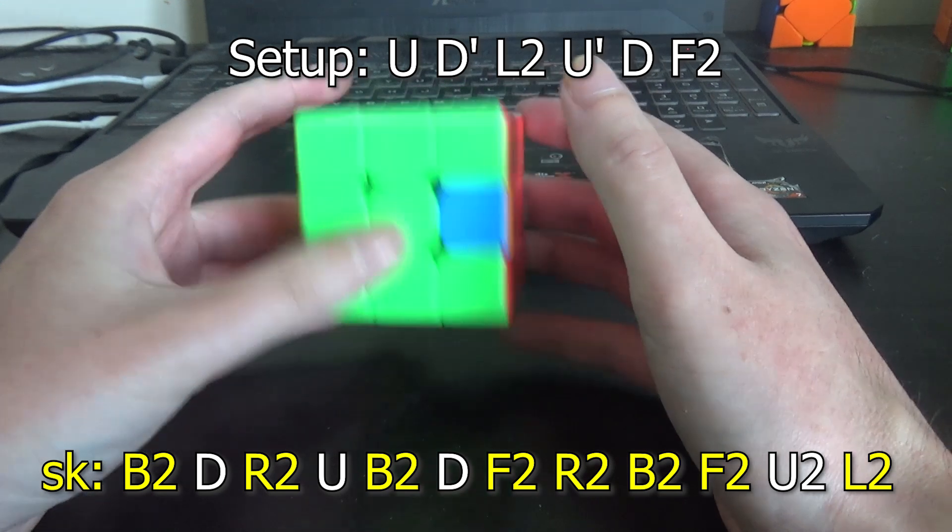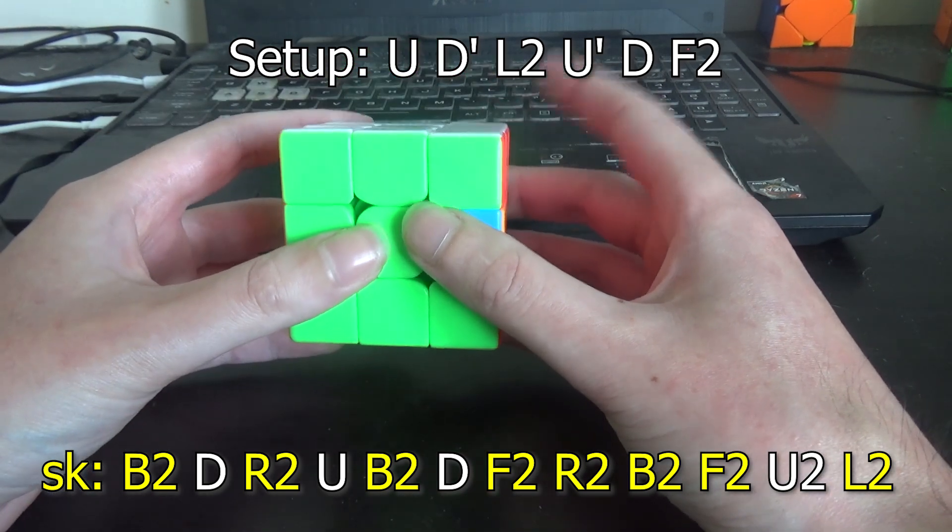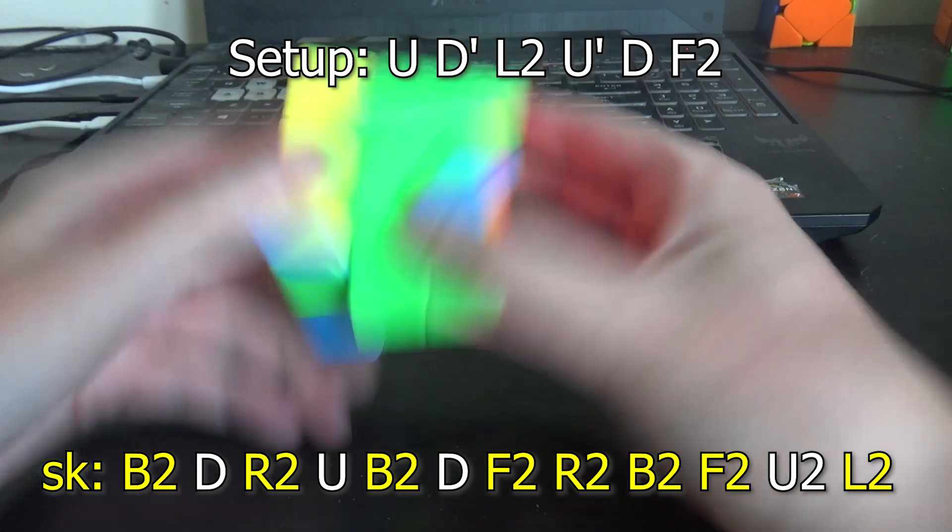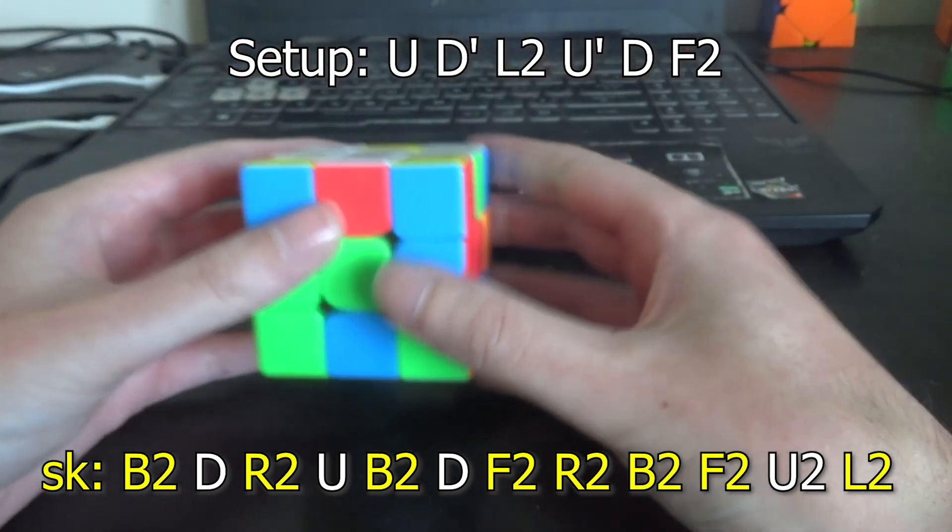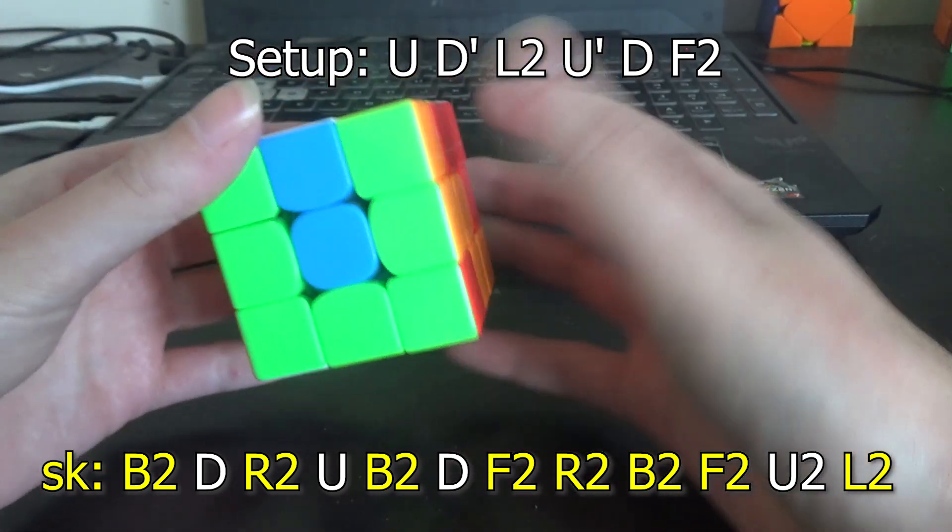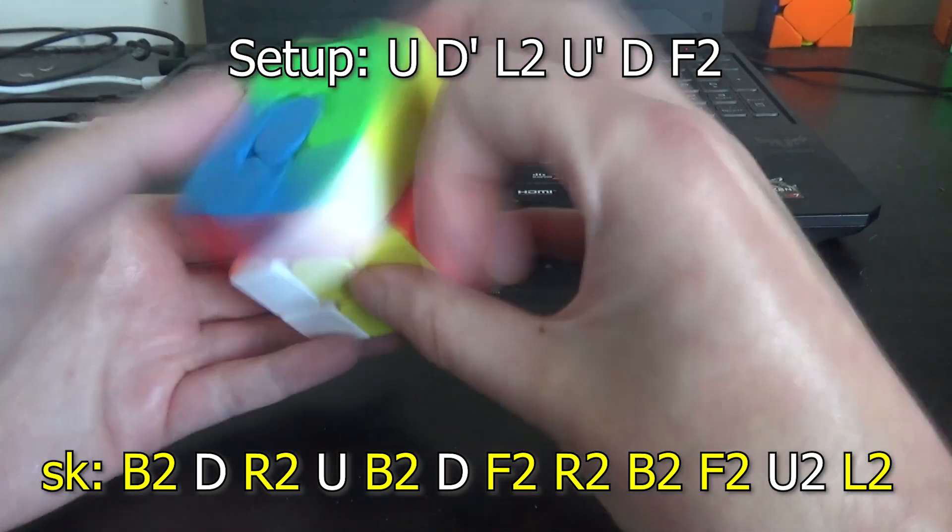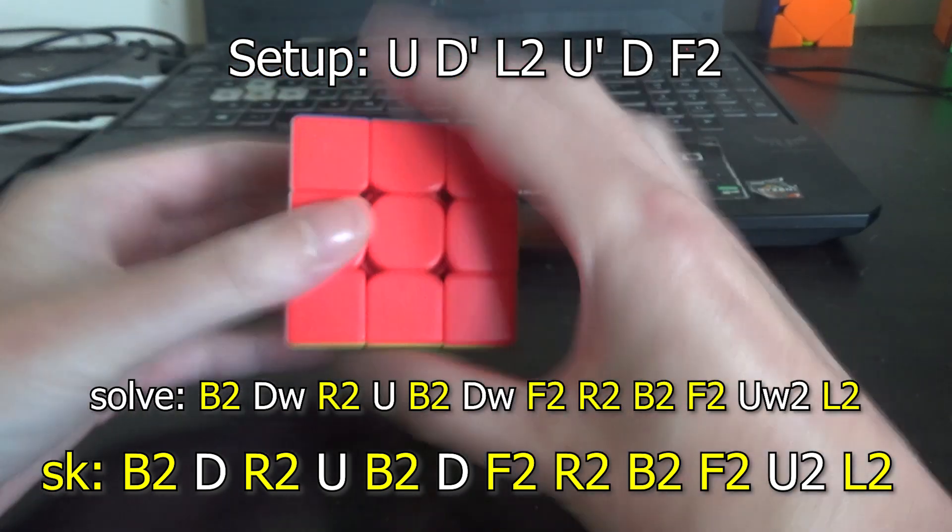But there is one more way to add no moves, which is widening both of the D moves and the U2. So let's try that. D, R2, U, B2, Y, D, F2, R2, B2, F2, U, W2, L2. And that actually works.